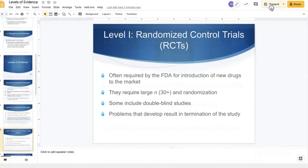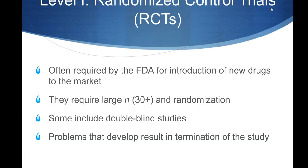Now we're going to talk about the other kind of level one, which is a randomized control trial. These are often required by the FDA for introduction of new drugs to the market. They require a large N, or a large number of participants, 30 plus, and randomization.